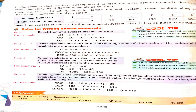Now here you can see a table of Roman numerals and Hindu-Arabic numerals. We represent 1 as I, 5 as V, 10 as X, 50 as L, 100 as C, 500 as D, and M is 1000.